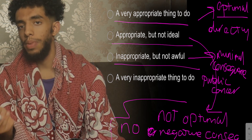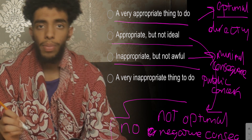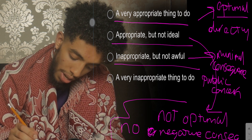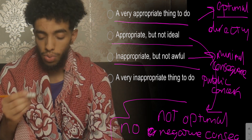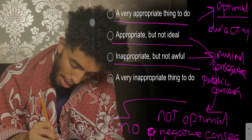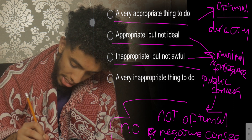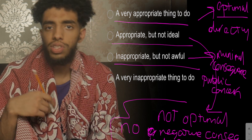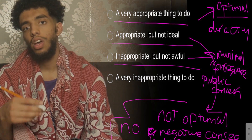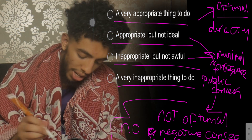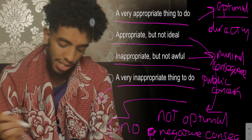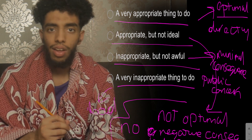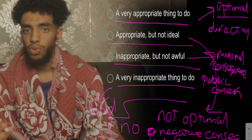Just to recap: 'very appropriate thing to do' is something optimal that directly addresses the question. 'Appropriate but not ideal' is one that's not optimal but has no consequences to public concern and patient health. 'Inappropriate but not awful' means it's not something good to do but there are minimal consequences to public concern and patient health. 'Very inappropriate to do' is obviously going to be majorly bad — very massive or detrimental effects to public concern and patient health.